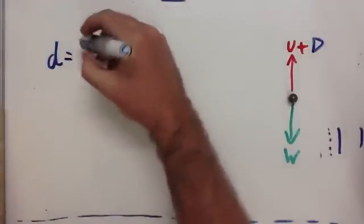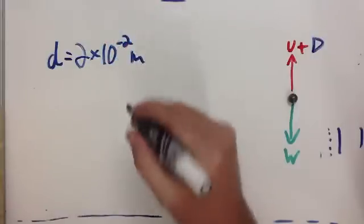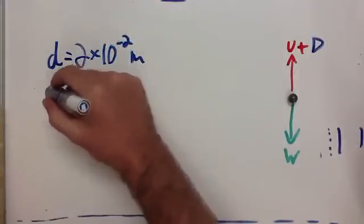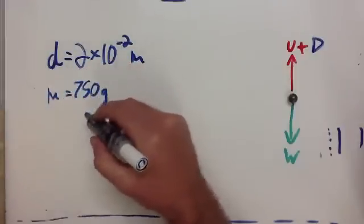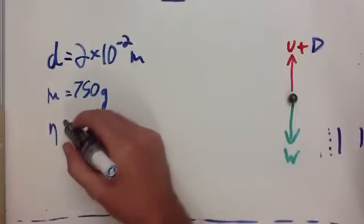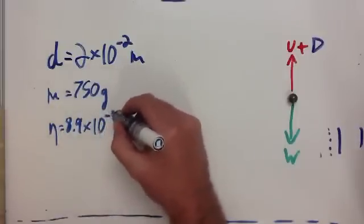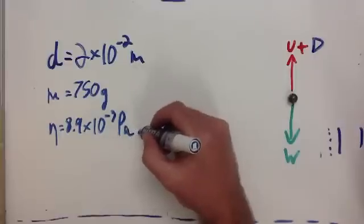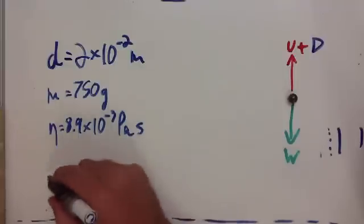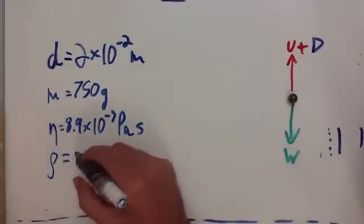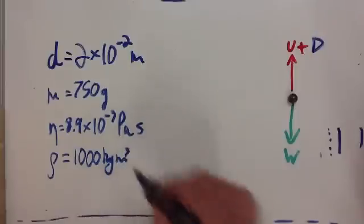So we'll say the diameter of the ball is equal to 2 centimeters. We'll also say that the mass of the ball is equal to 750 grams. The viscosity of the fluid is going to be 8.9 times 10 to the minus 3 Pascal seconds. And it's going to be falling in water. So, the density of water, just in case you need it, is 1,000 kilograms per meter cubed.